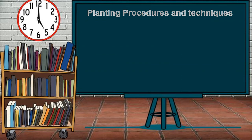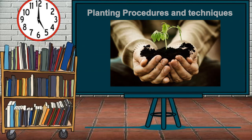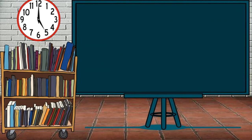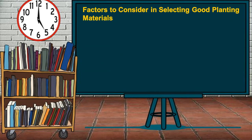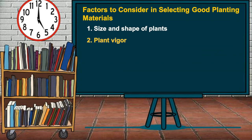Planting procedures and techniques. Why do selection of planting materials and proper land preparation for planting fruit trees ensure good quality yields? Factors to consider in selecting good planting materials include: first, size and shape of plants — choose trees that will produce good quality fruits. Second, plant vigor — healthy seedlings must be selected. Third, variety — choose a variety of fruit trees that are high quality and adapted to the soil and climatic conditions of the place. And lastly, early fruiting — this will provide satisfaction and early return of investment.